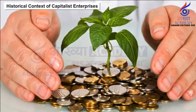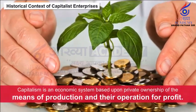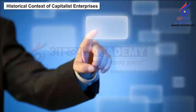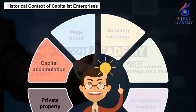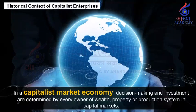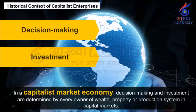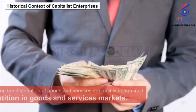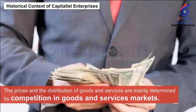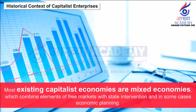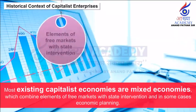Historical Context of Capitalist Enterprises. Capitalism is an economic system based upon private ownership of the means of production and their operation for profit. Characteristics central to capitalism include private property, capital accumulation, wage labour, voluntary exchange, a price system and competitive markets. In a capitalist market economy, decision making and investment are determined by every owner of wealth, property or production system in capital markets, whereas the prices and the distribution of goods and services are mainly determined by competition in goods and services markets.